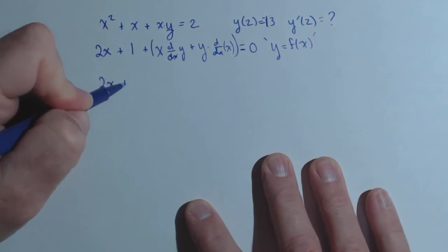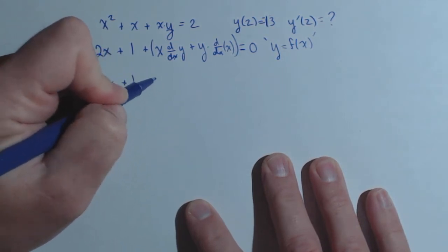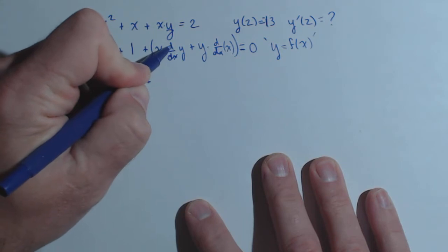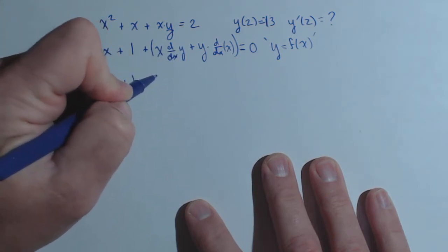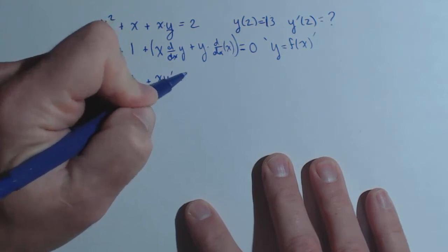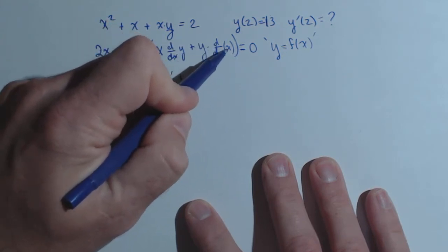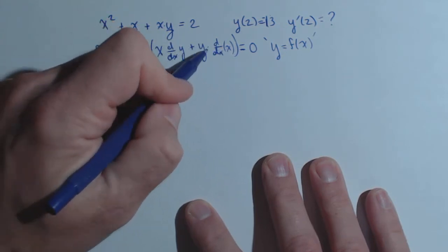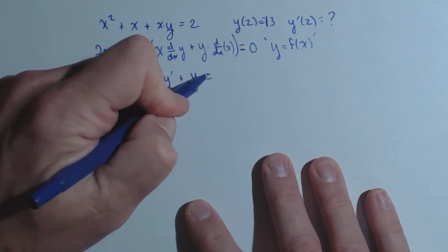So we have 2x plus 1 plus, now this is dy dx, or a lot of times I like to write it as y prime. So x times y prime plus the derivative of x with respect to x is just 1, so 1 times y, so plus y equals 0.